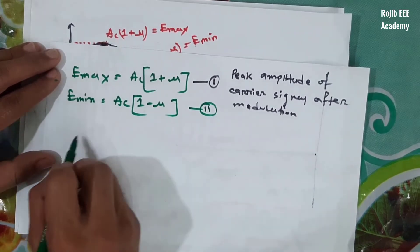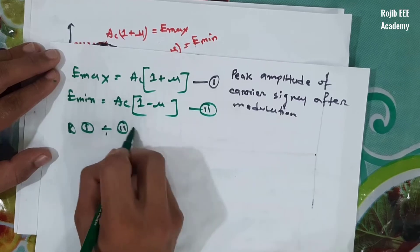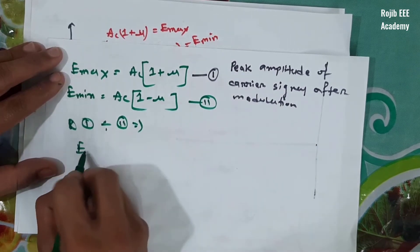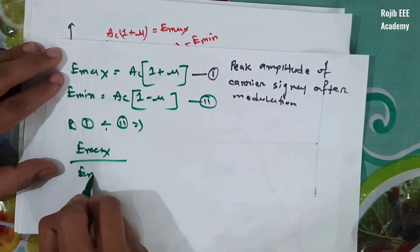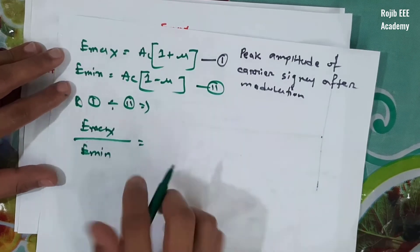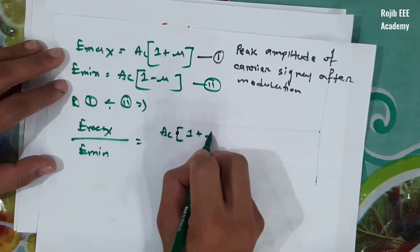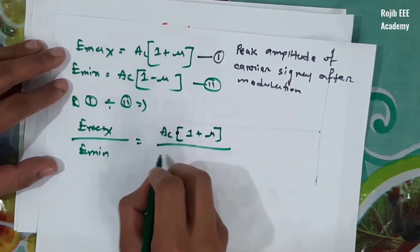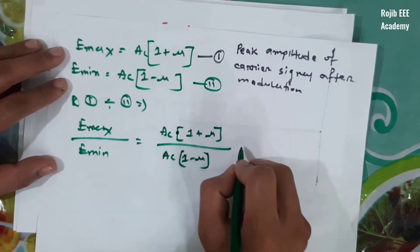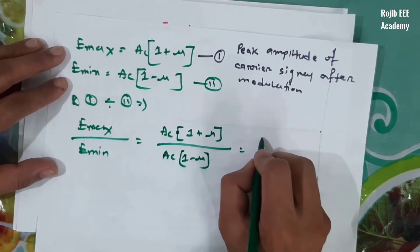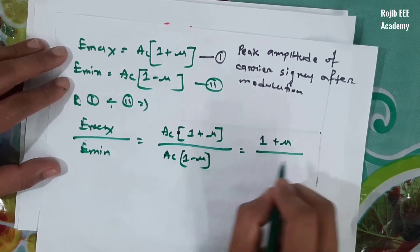Now we have equation 1 and equation 2. That means we have E_maximum divided by E_minimum. So we have Ac(1 + mu) and Ac(1 - mu). The ratio is: [1 + mu] divided by [1 - mu].